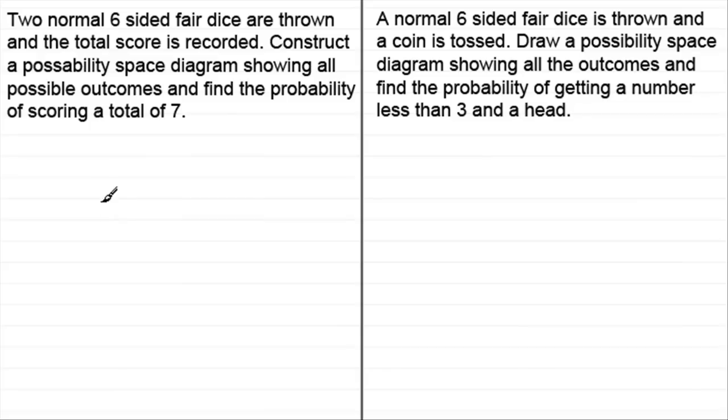So what we do is this. We have a column and a row for each of the dice. So we could say this is dice one and this is dice two. And what kind of scores could we get on dice one? Well, in this example you could get a one, two, three, four, five or six. And they're all equally likely to occur.